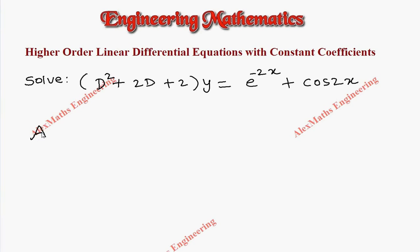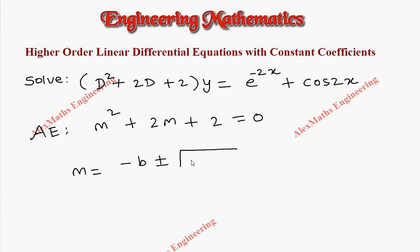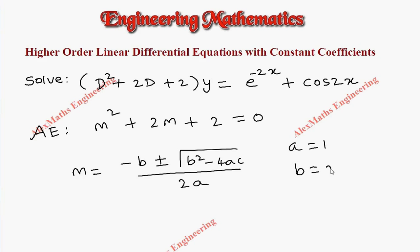As a first part we have to write the auxiliary equation which is m² + 2m + 2 = 0. The product and sum don't allow us to factorize, so we have to use the quadratic formula: minus b plus or minus root of b² minus 4ac, whole divided by 2a. Here the value of a is the coefficient of m² which is 1, value of b is the coefficient of m which is 2, and value of c is the constant which is 2.